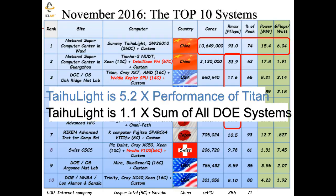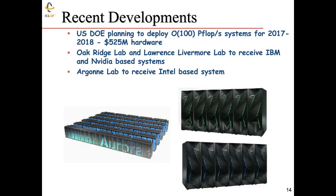In the U.S., there are plans within the Department of Energy to deploy a number of high-performance systems above what we currently have — with an investment of around half a billion dollars in hardware. Two of those machines will be based on IBM and NVIDIA products, augmenting processors with accelerators to boost performance. Those machines will go into Oak Ridge National Laboratory and Lawrence Livermore National Lab. Argonne National Laboratory outside of Chicago will receive a machine based on Intel's next generation of many-core processors.